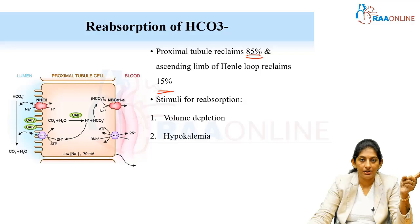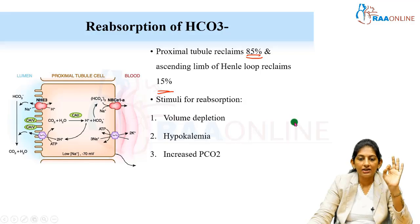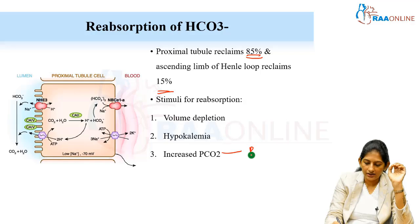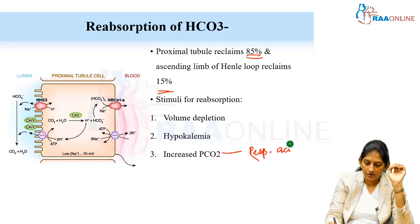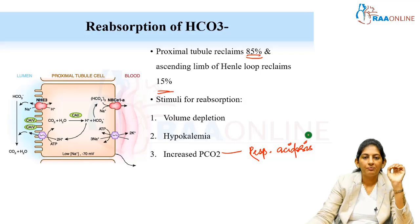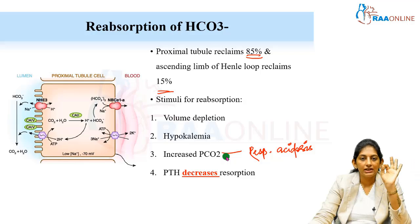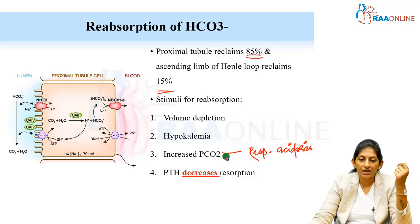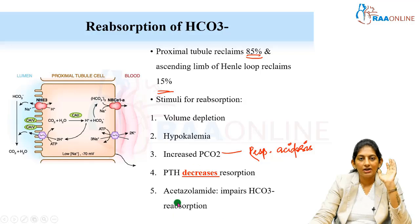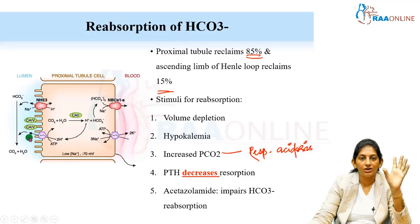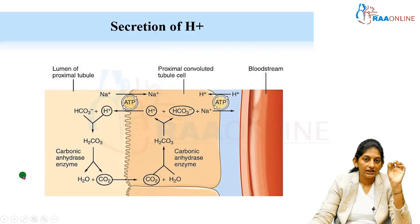When there is hyperkalemia, there is acidosis; with hypokalemia, there is metabolic alkalosis. Increased PCO2, as in respiratory acidosis, causes the kidney to conserve and reabsorb bicarbonate as compensation. Parathyroid hormone decreases reabsorption, so hyperparathyroidism is associated with acidosis and hypoparathyroidism with alkalosis. Acetazolamide, a carbonic anhydrase inhibitor, impairs bicarbonate reabsorption by inhibiting the carbonic anhydrase enzyme.